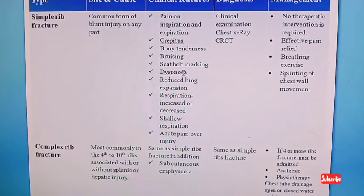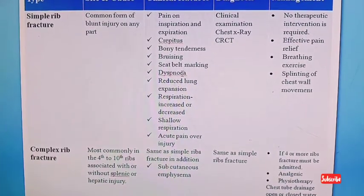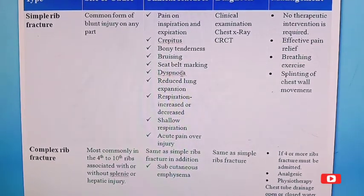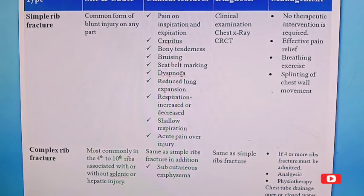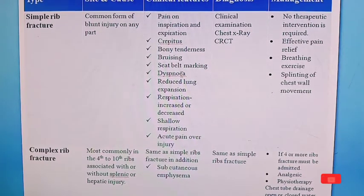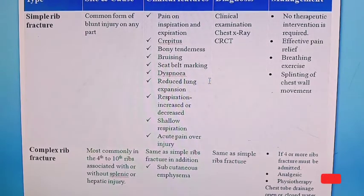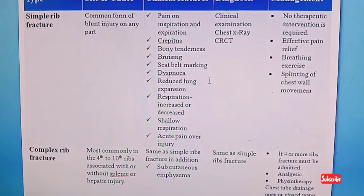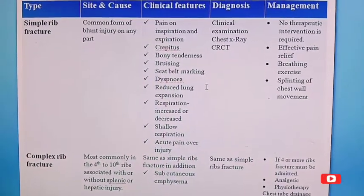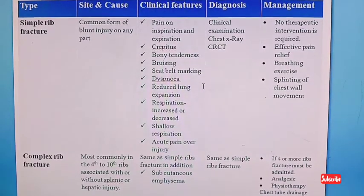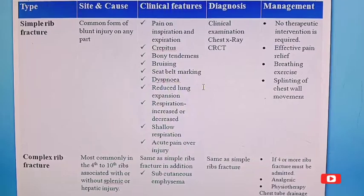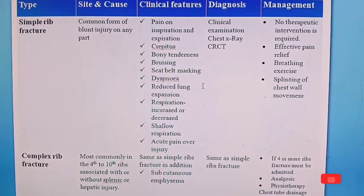Simple rib fracture is commonly caused by blunt injury to any part of the chest. Clinical features include pain on inspiration and expiration, crepitus, bony tenderness, bruising, seat belt marking, dyspnea, reduced lung expansion, shallow respiration, and acute pain over the injury site. Diagnosis is mainly by clinical examination, history taking, physical examination, chest X-ray, and CT scan.